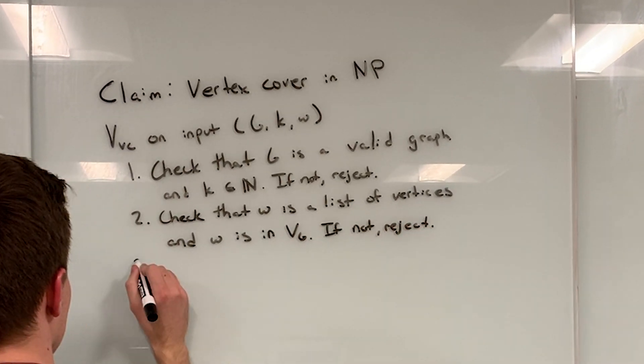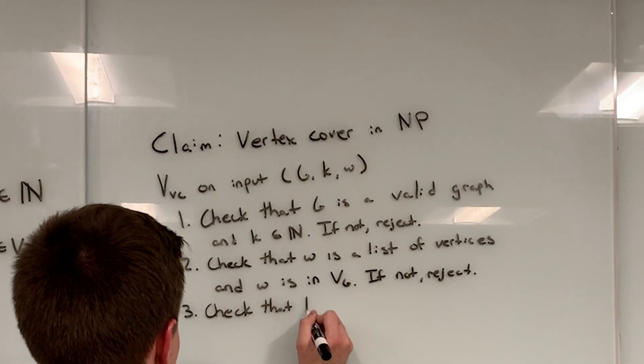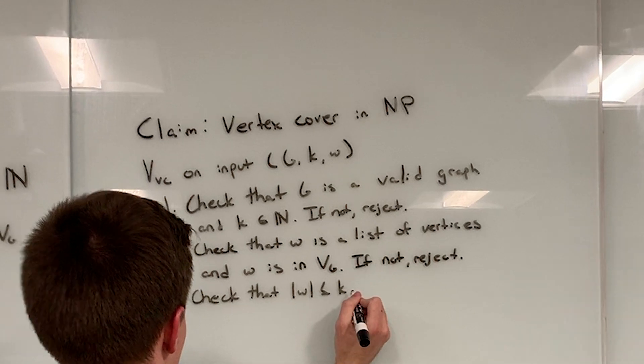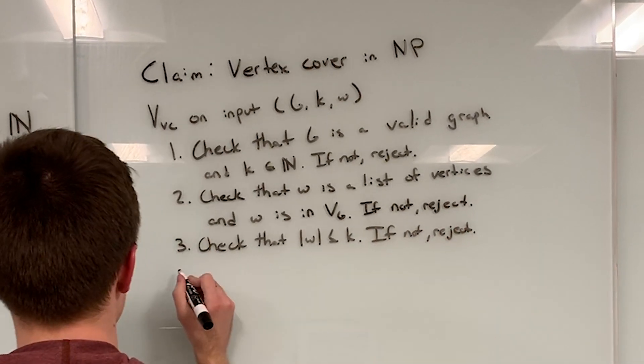Step 3 checks that the size of W is less than or equal to K. If the size of the covering of vertices are greater than K, that means the covering covers more than K, and so we must therefore reject.